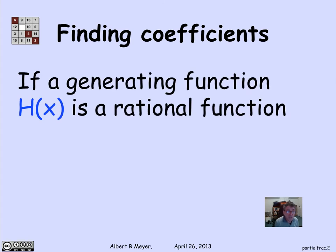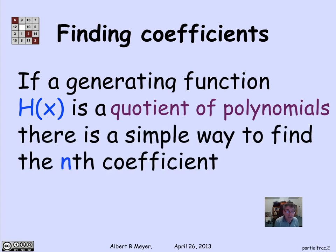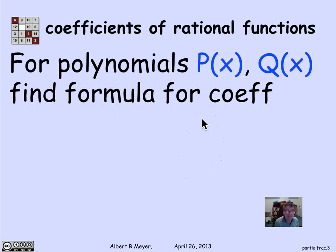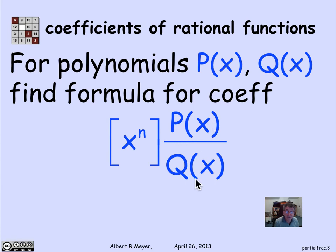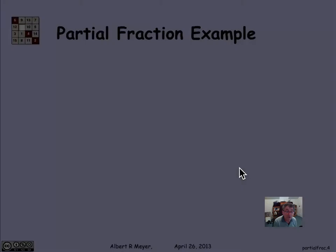If I have a generating function h(x) that's a rational function — that is, a quotient of polynomials — then there's a simple way to find its nth coefficient. That is, h_n is the coefficient of x^n in h(x). Suppose h(x) is p(x) over q(x), where p(x) and q(x) are polynomials, and I'm trying to find the nth coefficient of p(x) over q(x). I'm going to break up the quotient into partial fractions.